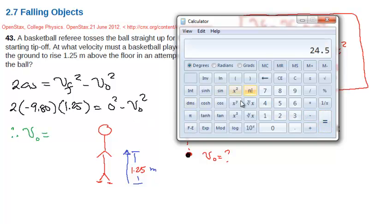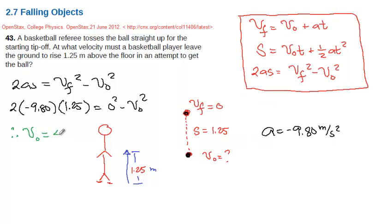So 24.5 and I take the square root of that. Where's the square root here? Yeah, there. It's 4.95 meters per second. 4.95 meters per second.